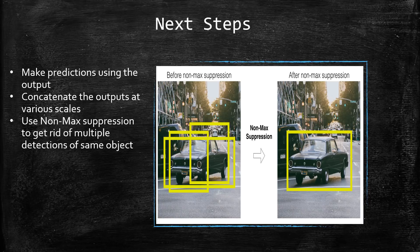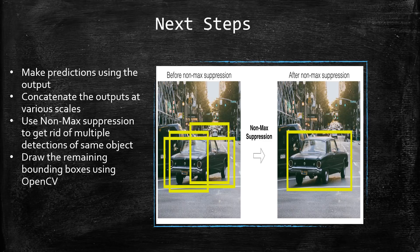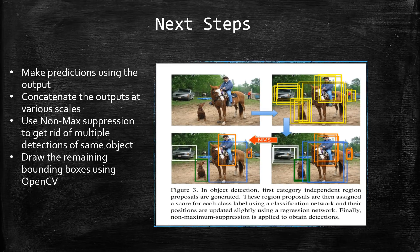Before non-max suppression, a car might be detected with multiple bounding boxes; after NMS, only the best one remains. We then draw the remaining bounding boxes using OpenCV. The full pipeline is: input image → detect multiple objects → filter by objectness confidence → apply NMS to eliminate duplicate detections → draw final bounding boxes. If you haven't understood any particular part — output dimensions or otherwise — look it up as it's really important. In the next video we'll actually implement the network from a configuration file, which is something new for this channel. Thanks for watching and stay tuned.